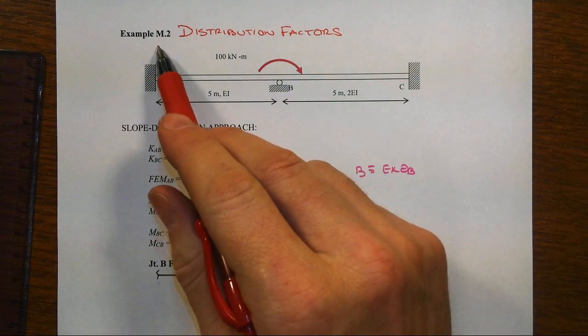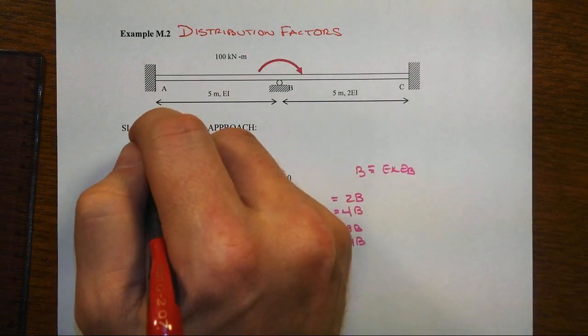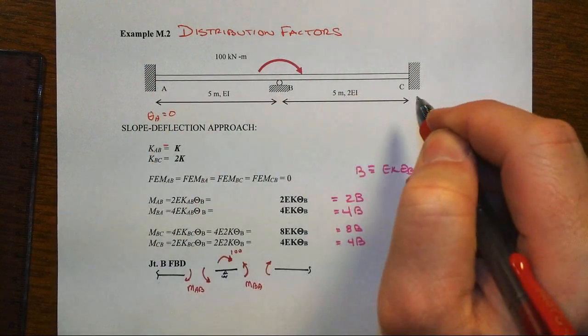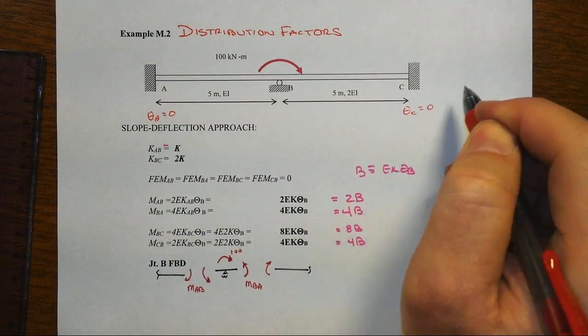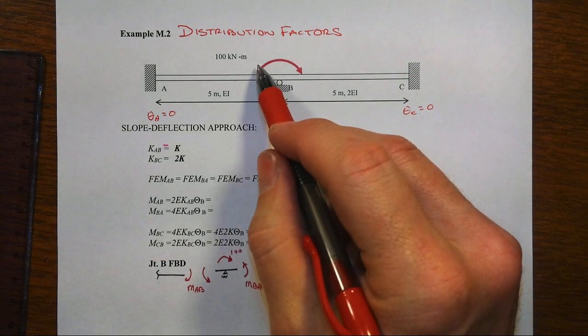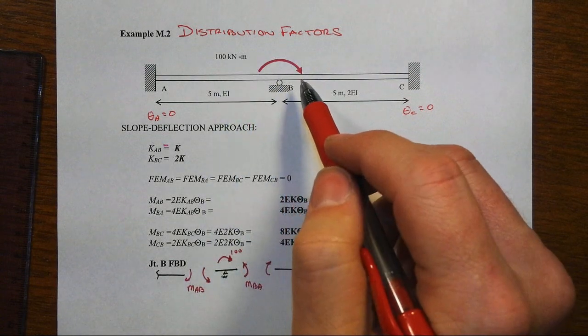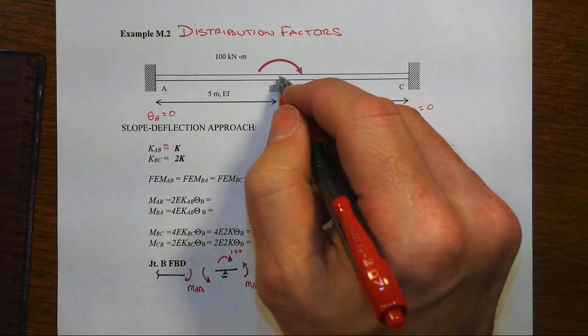So this is almost like the structure of example one, but we have put a fixed end, locked down what is going on at A and what is happening at C. We do have rotation at B that's going to develop in response to a force, or rather a moment that's being applied here at joint B.